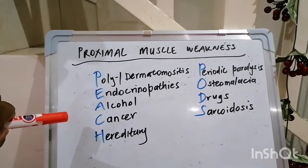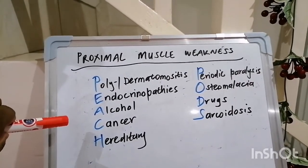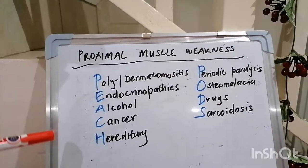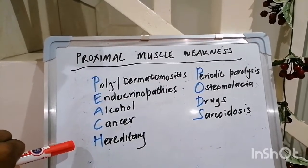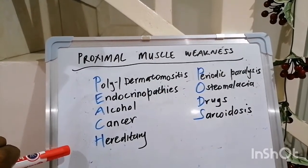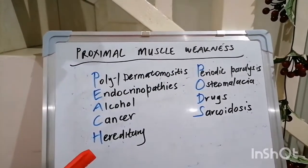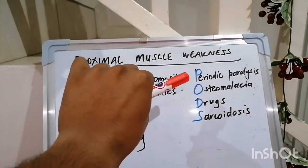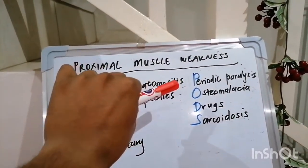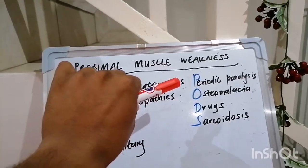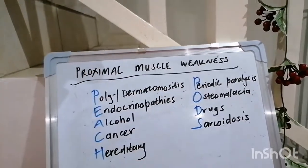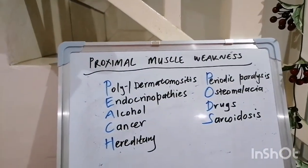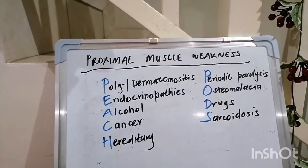Cancer can also cause proximal muscle weakness as a paraneoplastic phenomenon. Hereditary issues like Duchenne's and Becker's muscular dystrophy would probably manifest much earlier in life. Periodic paralysis — especially thyrotoxic periodic paralysis or that induced by hypokalemia — so don't forget what other metabolic and electrolyte problems also manifest with proximal muscle weakness.